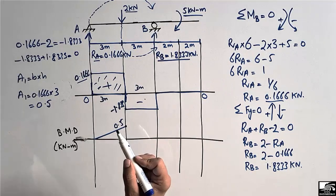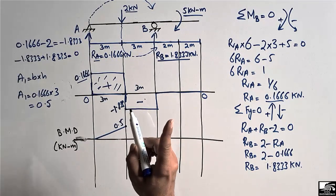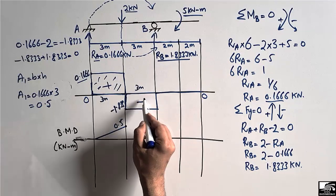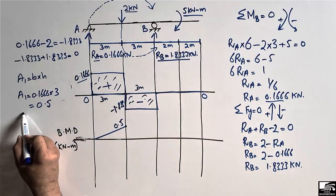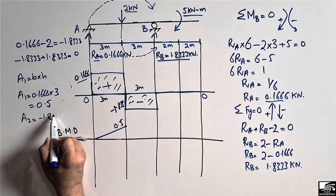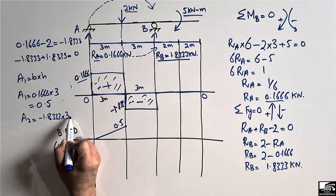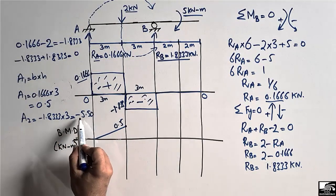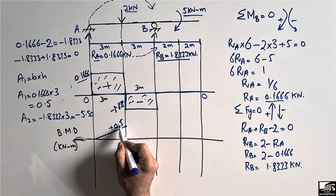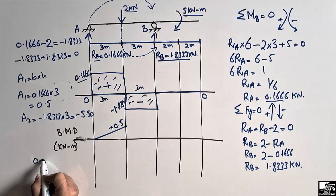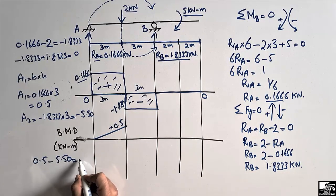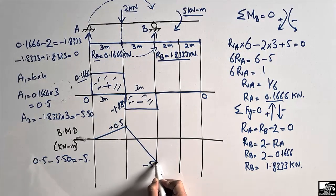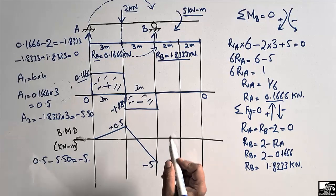For the second shear box, A2, it is negative, so the height is minus 1.833 kN and the base is 3 meters. Area A2 equals minus 1.833 multiplied by 3, giving minus 5.50 kNm. Adding the two areas: 0.5 plus minus 5.5 gives minus 5. So the bending moment at support B is minus 5 kNm.